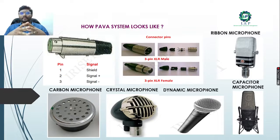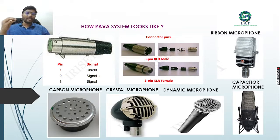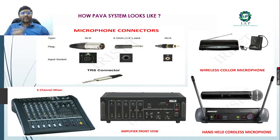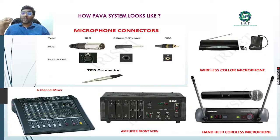This is how the PAVA system looks. We have connecting pins for mics. There are different types of microphones: rubber, capacitor, dynamic, crystal, and carbon microphones, with male and female connector pins. For microphone varieties we have XLR type, 6.5 mm jack, and RCA type, with both input sockets and plugs. For wireless microphones we have handheld cordless and wireless collar microphones. For mixing purposes we use six-channel mixers, and for amplifying we use an amplifier.